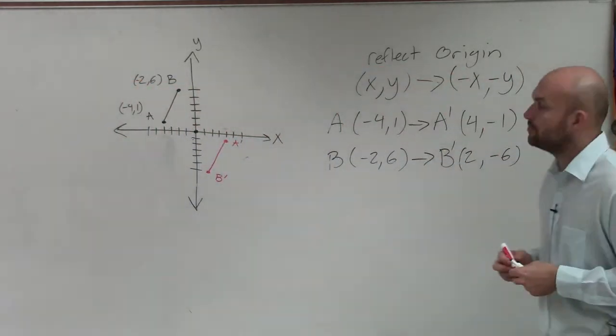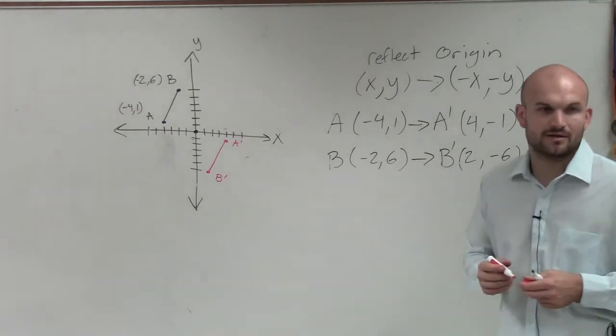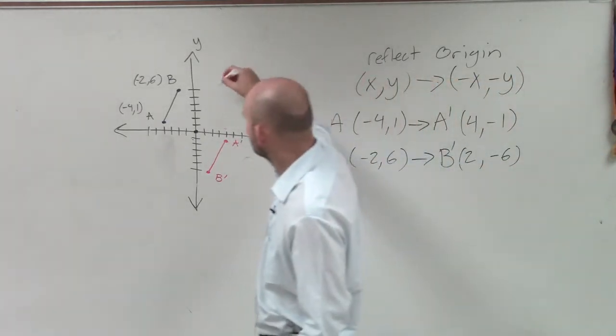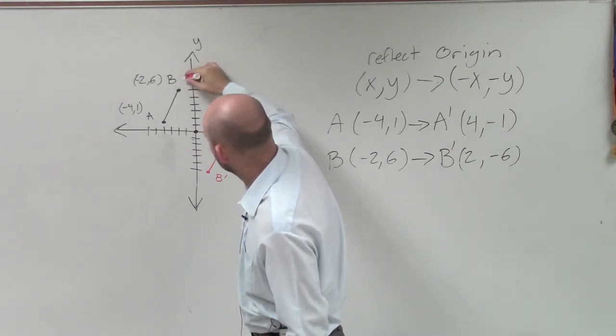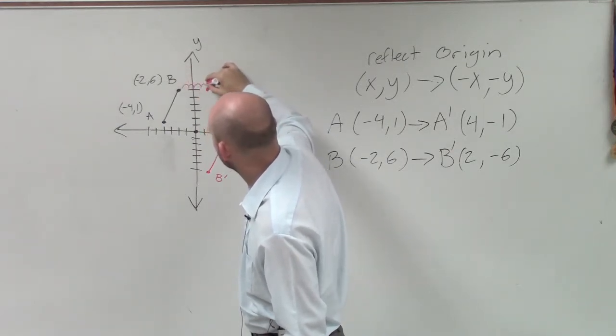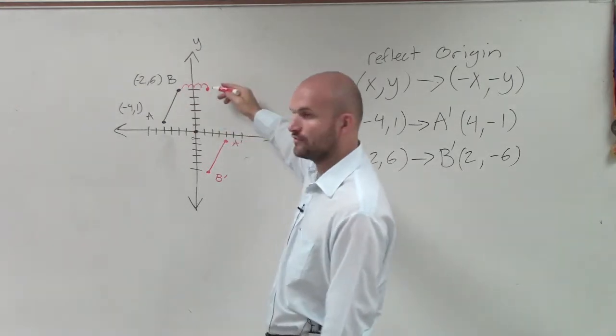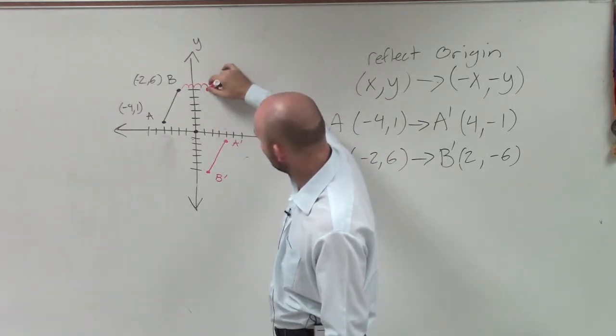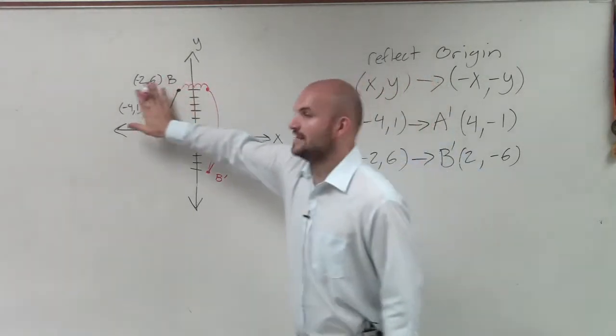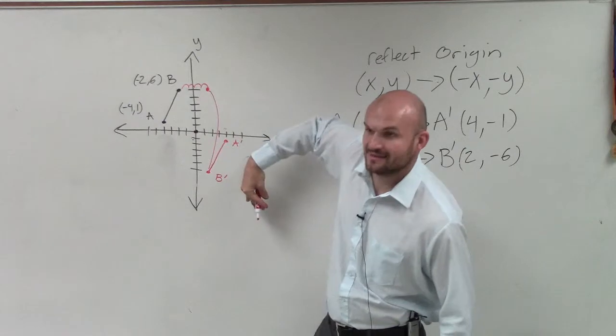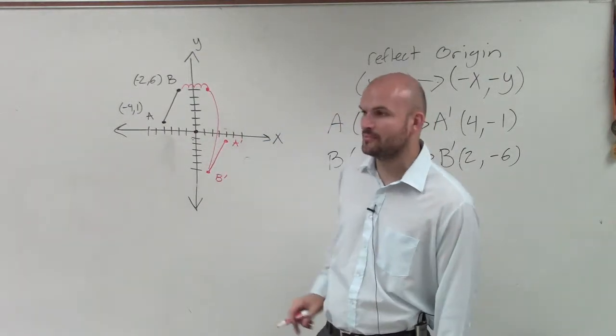So that's what that point looks like reflected about the origin. And what you guys can see is the point. See how it's reflected over the y-axis? And then that point was reflected over the x-axis. Right? Think about it. You do it like this, and then you went like that. OK? And that's how you got to that point.